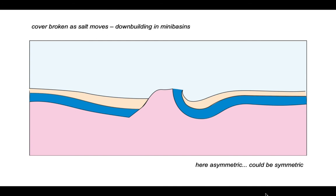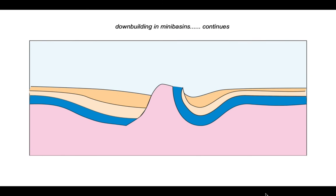So this is an asymmetric system. It could be symmetrical. We'll look at this later on. So as we continue depositing in the mini basins, down building, forcing out the salt from underneath, and the salt dome rises.